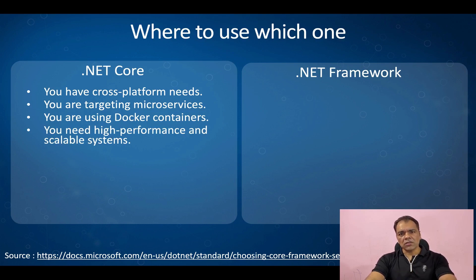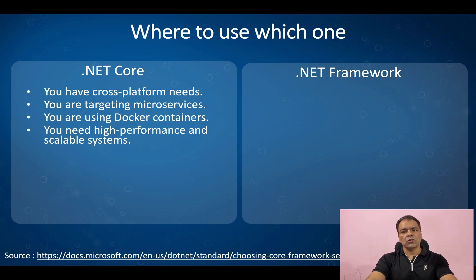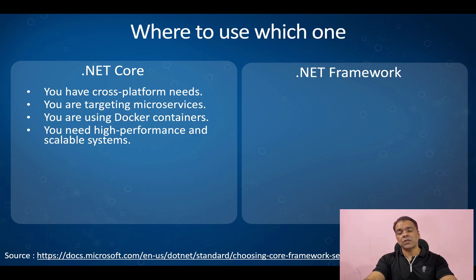.NET Core is 40 times faster than .NET Framework code for similar functionality, because it's more modular, more scalable, and the .NET Core compiler has been tuned to deliver higher performance.